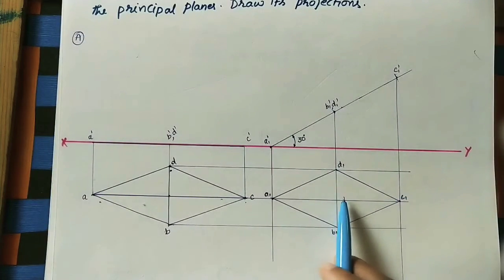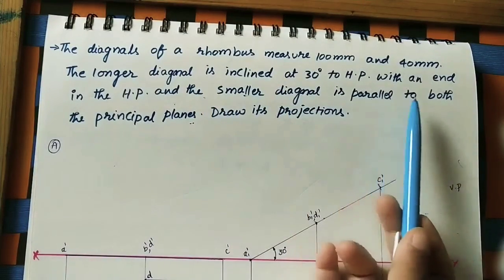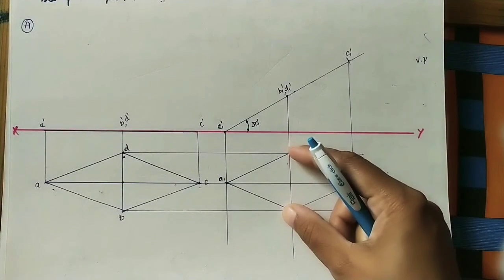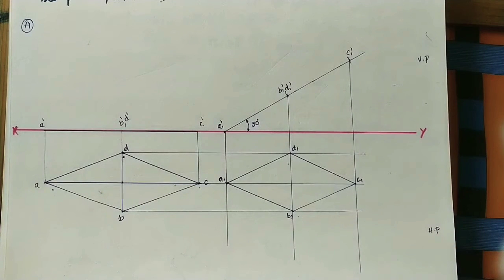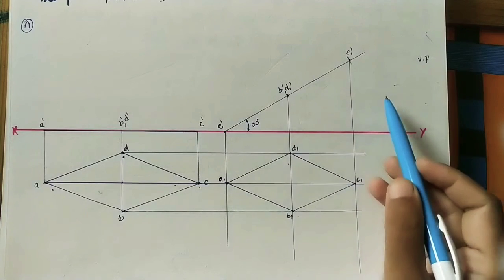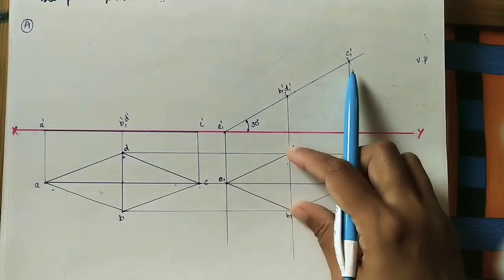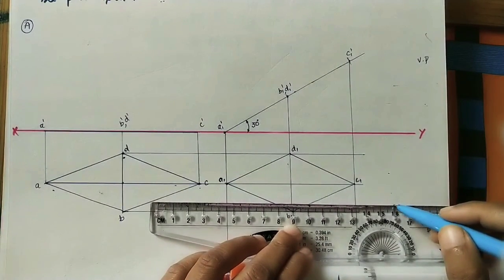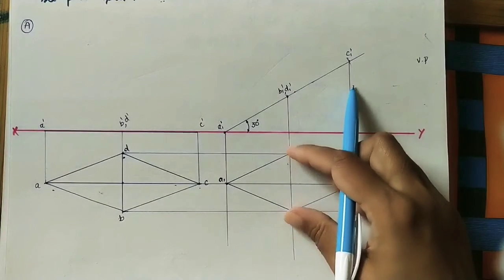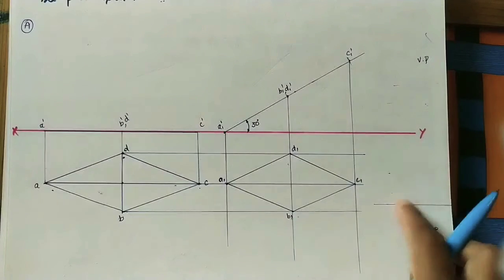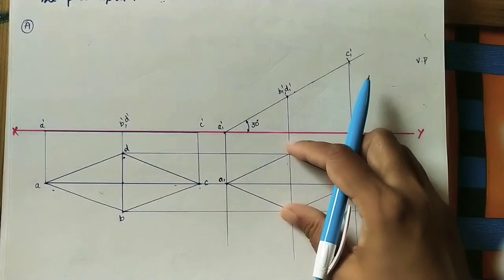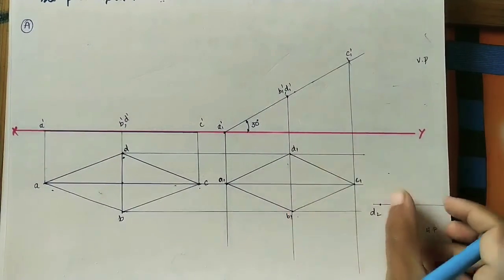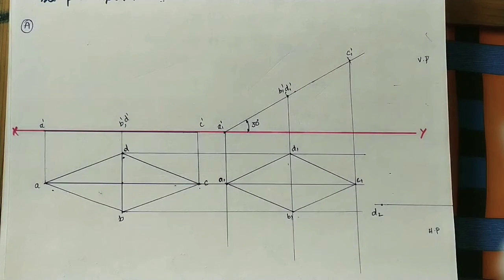After getting the reduced rhombus, the next step addresses the condition that the smaller diagonal BD is parallel to both the principal planes — both the vertical plane and horizontal plane. If a line is parallel to both planes, draw a horizontal line at any convenient location, and mark the smaller diagonal length parallel to this line.